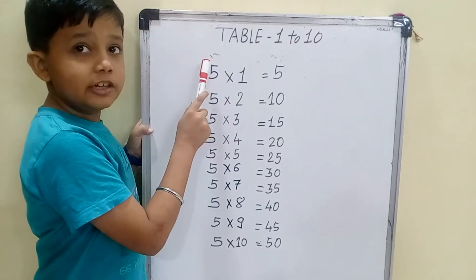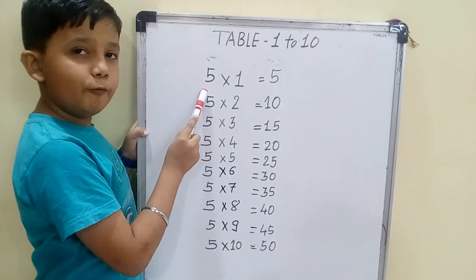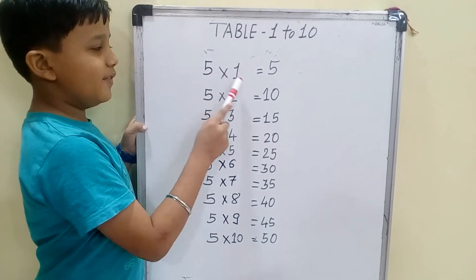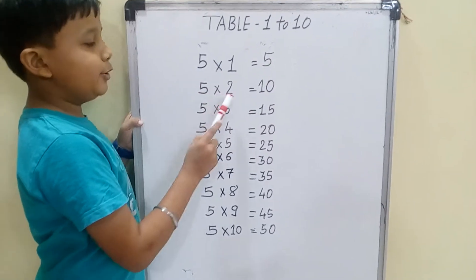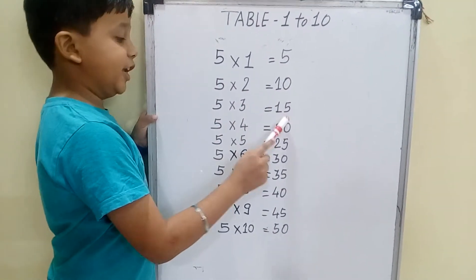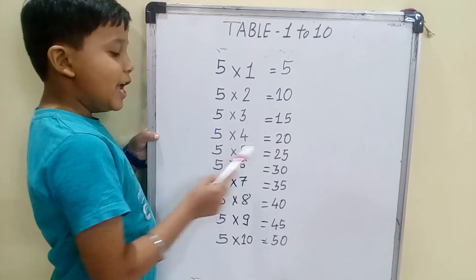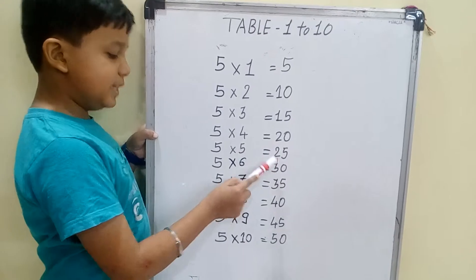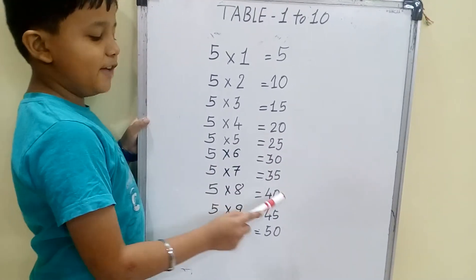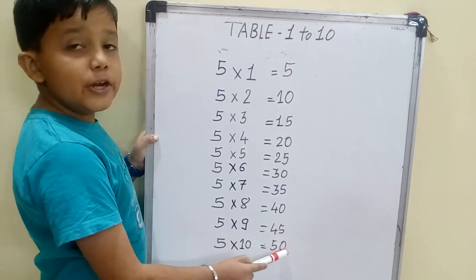Now learning the fifth table, the table of 5. 5 one is 5, 5 two is 10, 5 three is 15, 5 four is 20, 5 five is 25, 5 six is 30, 5 seven is 35, 5 eight is 40, 5 nine is 45, 5 ten is 50.